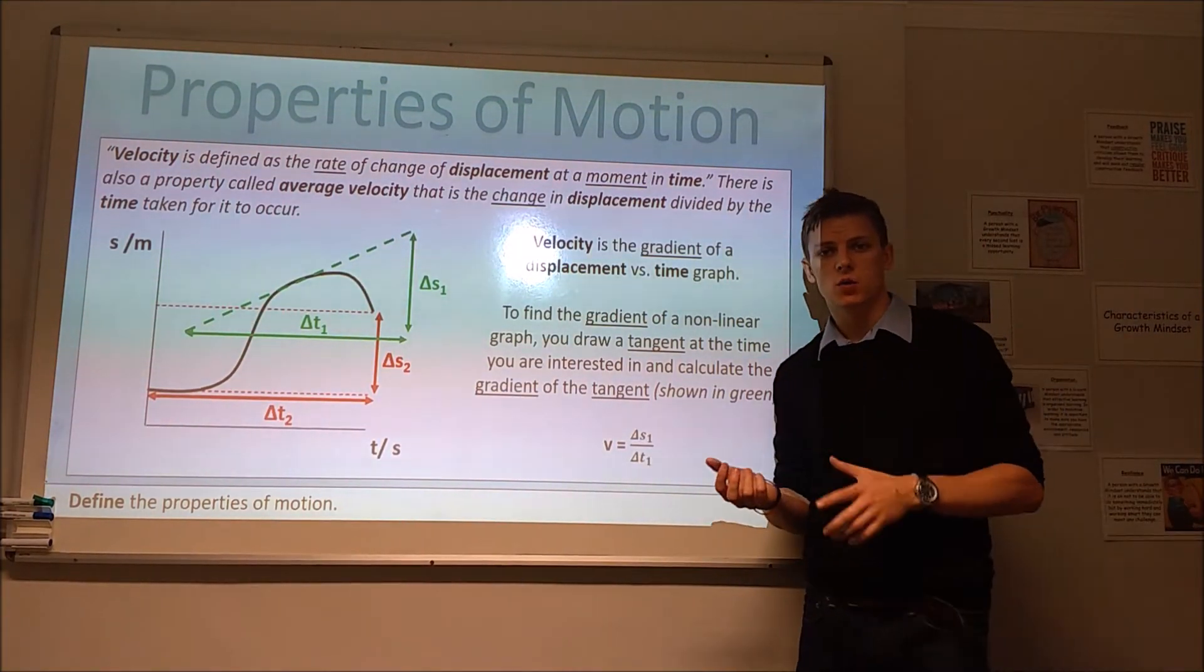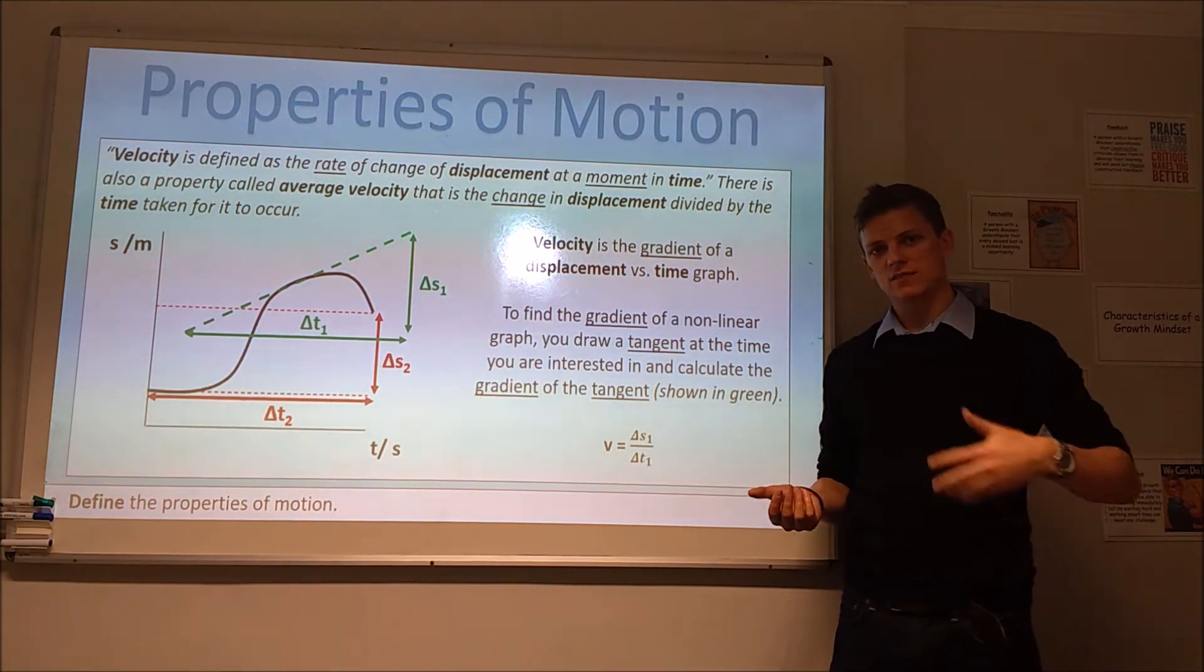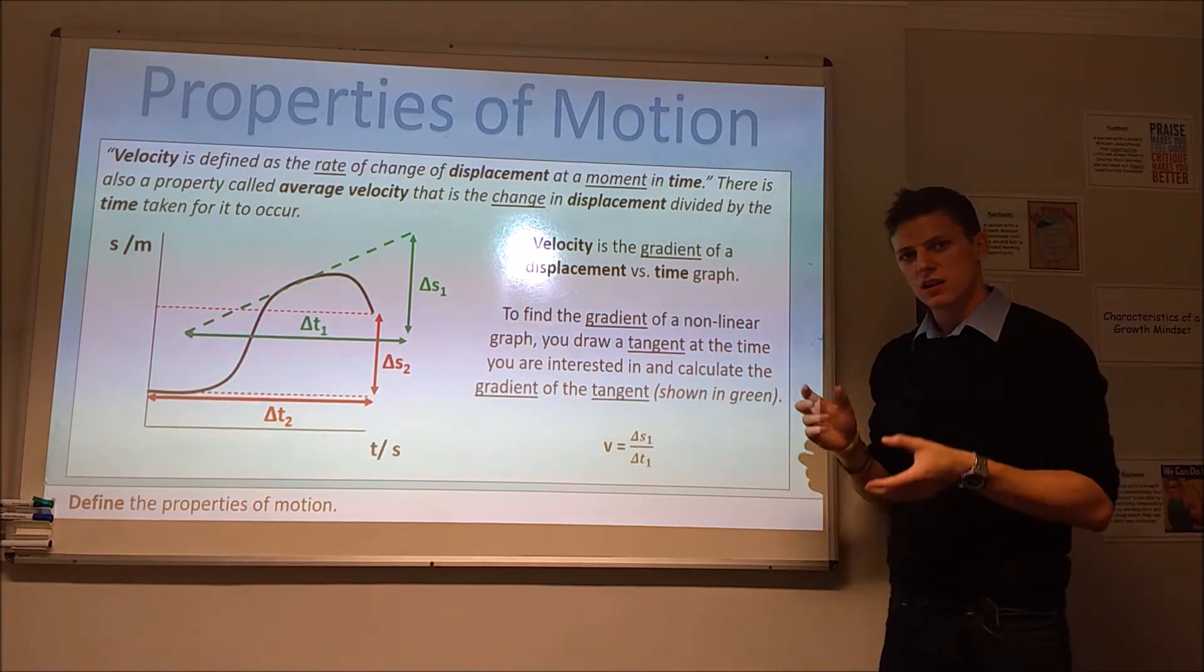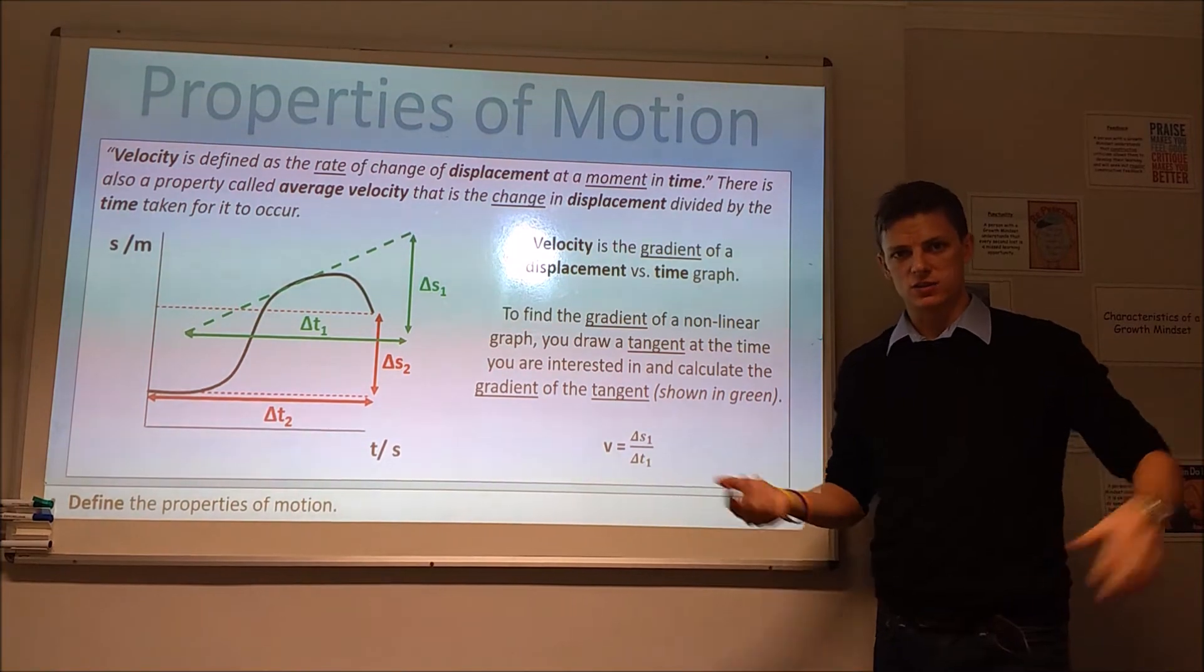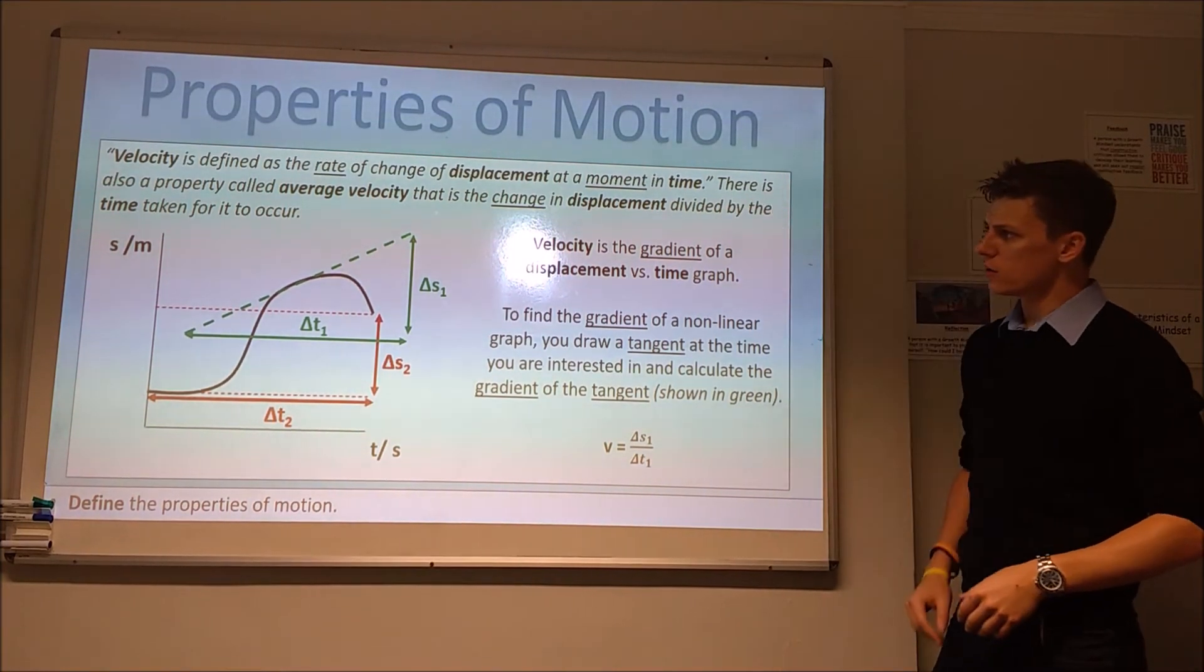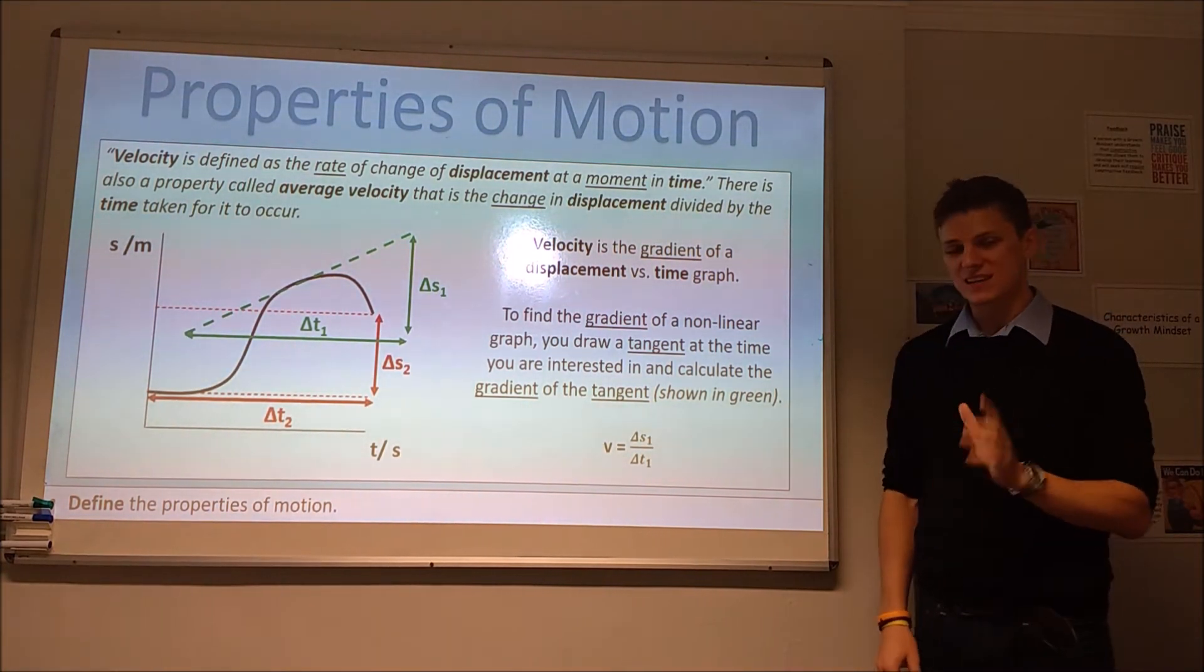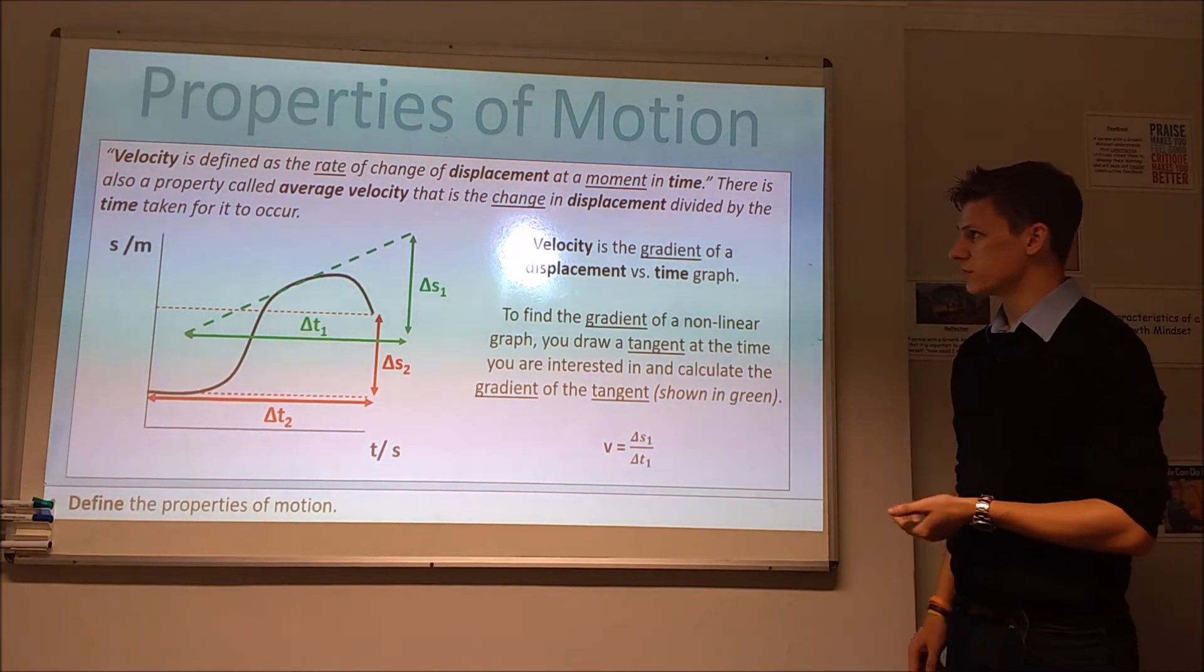For our next property of motion, we're going to talk about velocity. You've probably come across speed before, speed being the amount of distance that an object travels in a certain amount of time. Velocity is quite similar to that, but it has a more precise definition. Velocity, like displacement, also has a direction. Speed is just a size or magnitude. Velocity has magnitude and direction, so velocity is a vector quantity. Velocity is defined as the rate of change of displacement at a specific moment in time. It's often known as instantaneous velocity, but that's very long, so we just call it velocity for short.